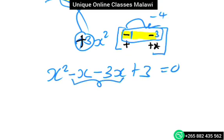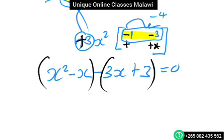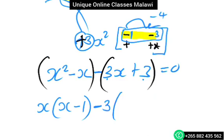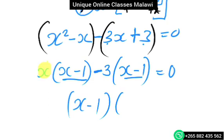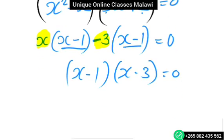The next step is to group the terms by pairing. We should find the common factor in each bracket. In the first bracket, the common factor is x, giving us x(x - 1). In the second bracket, we factor out negative 3, then is equal to zero. So we're gonna have x minus 1, and the other bracket will be x minus 3, equal to zero.